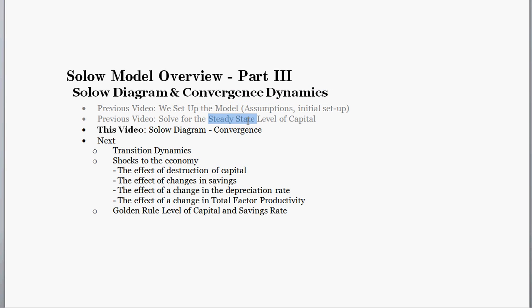Why is the steady state relevant to us? Why do we think that if the model were off that equilibrium, off that steady state, why would it converge towards the steady state value of capital? So let's get started.